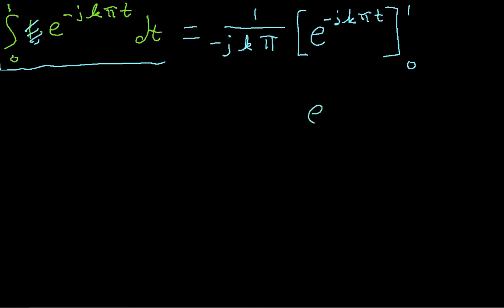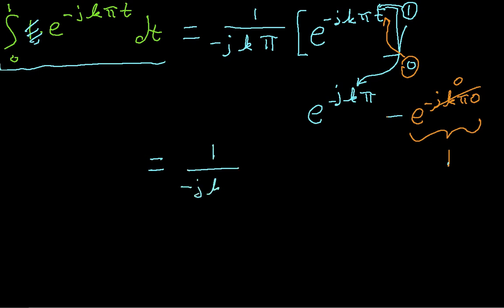So evaluated at 1, this is going to be e^(-jkπ), because if I plug 1 in for t, then I get this. Minus, if I plug 0 in for t, then I get e^(-jkπ·0), which means this whole thing is 0, which means that this is 1. So I can combine these two together, and I get 1 over -jkπ times (e^(-jkπ) - 1).